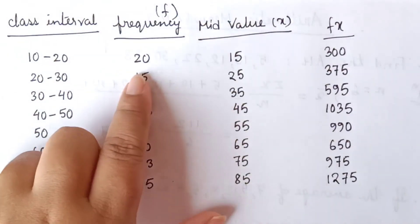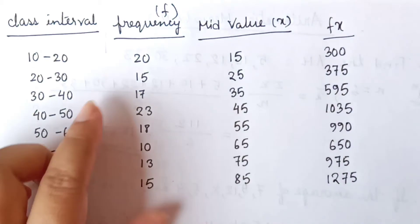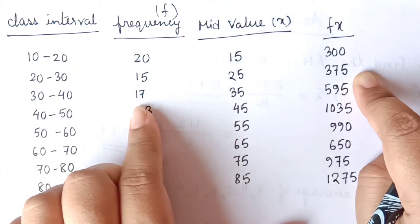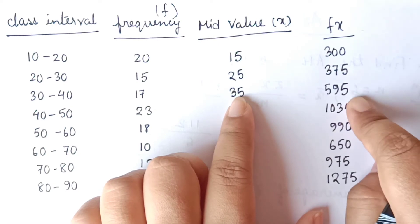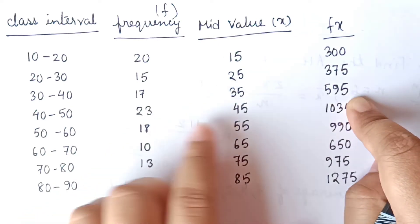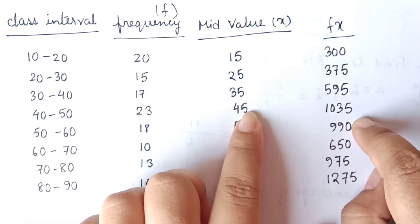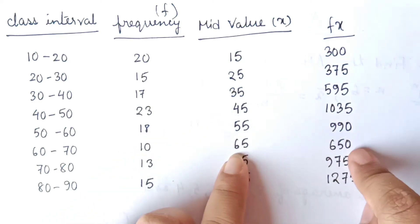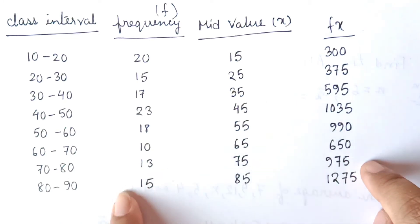So the values are: 20 into 15 equals 300, 15 into 25 equals 375, 17 into 35 equals 595, 23 into 45 equals 1035, 18 into 55 equals 990, 10 into 65 equals 650, 13 into 75 equals 975, 15 into 85 equals 1275.